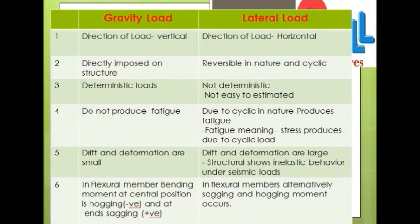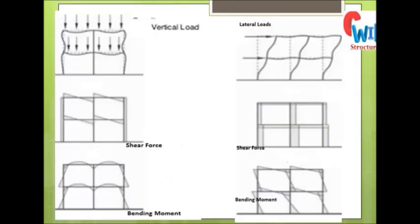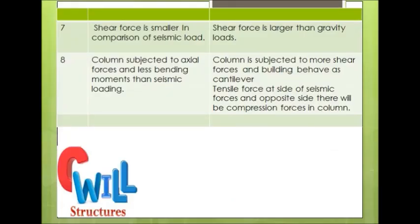The next difference relates to flexural members. Under gravity loading, the bending moment at the central position is hogging (considered negative) and the ends show sagging behavior, as you can see in the figure. Under lateral loading, the flexural member alternatively shows sagging and hogging moment. This diagram shows the basic difference in shear force and bending moment diagrams under gravity and lateral loading.